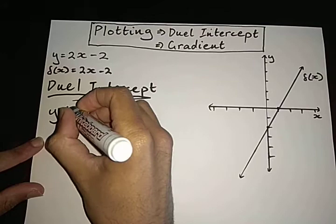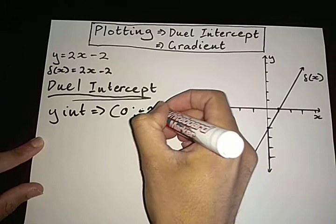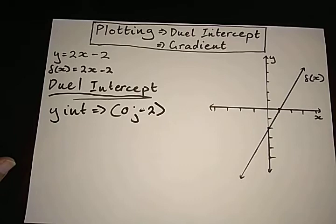To find our y intercept on a straight line graph, that's very simple. The y intercept always follows the form of 0 and our c value, which would be negative 2. So I'm going to put that coordinate aside.